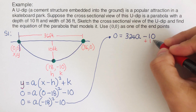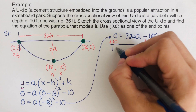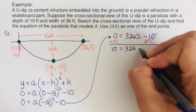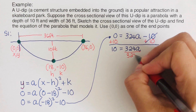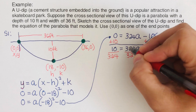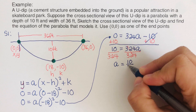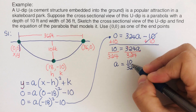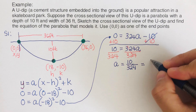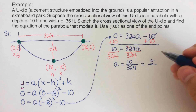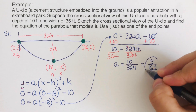Adding 10 to both sides: 10 = 324a. Dividing both sides by 324: a = 10/324. Since both 10 and 324 are divisible by 2, we reduce this to a = 5/162. That is our value for a.